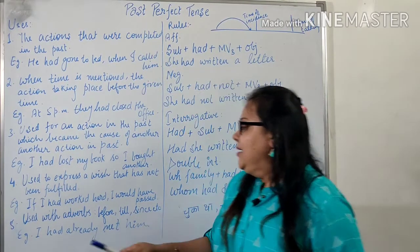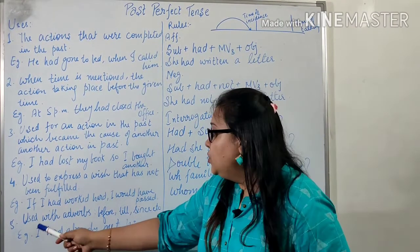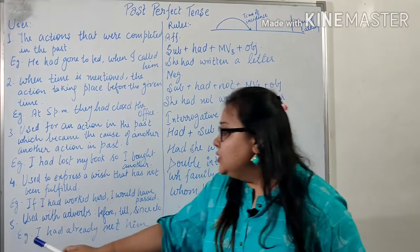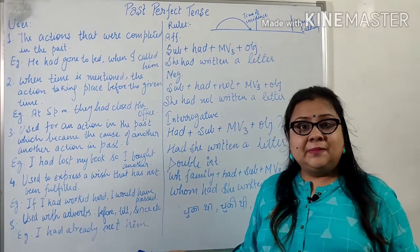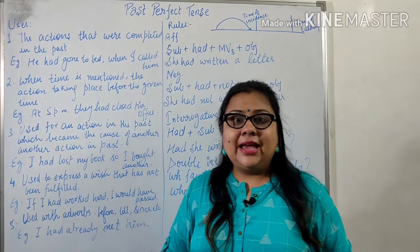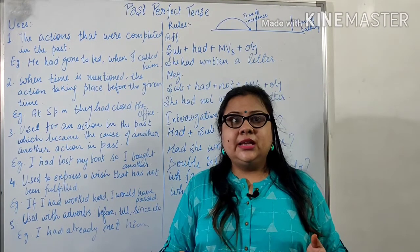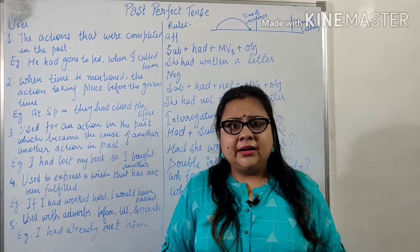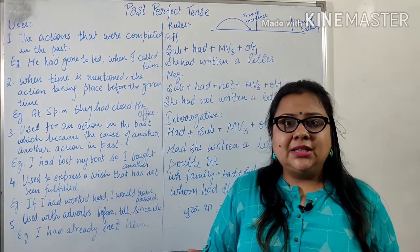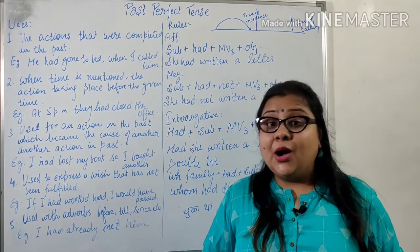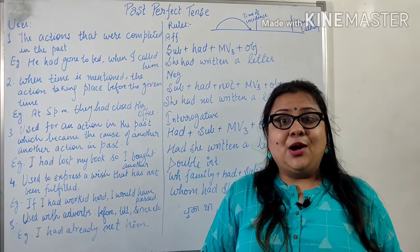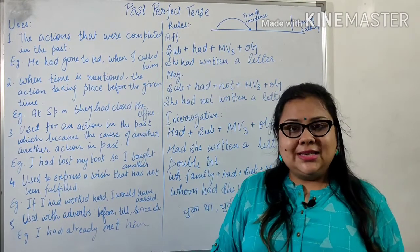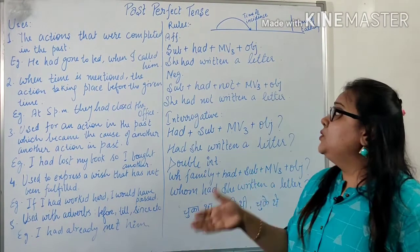Talking about the last application: past perfect is used with adverbs like 'before', 'till', 'since', etc. For example: 'I had already met him.' Another example: 'I had not seen him till then' — maine usse tab tak nahi dekha tha. We use 'had' here because we are talking about the past. This is all about the uses and rules of past perfect tense.